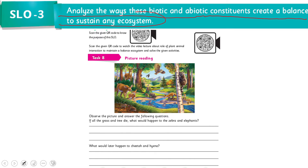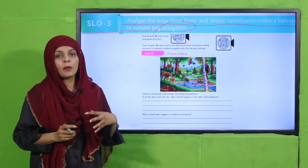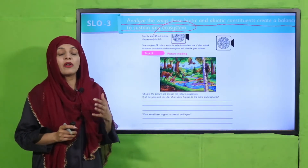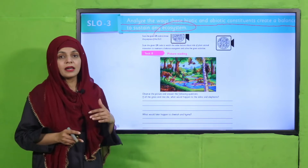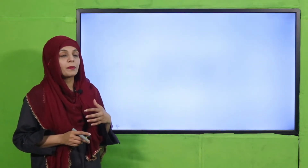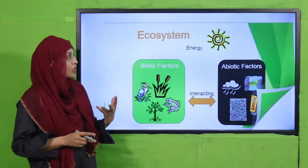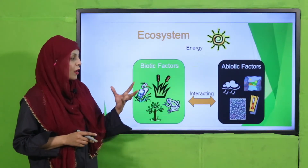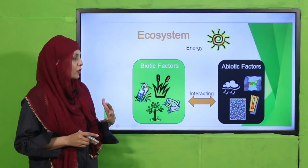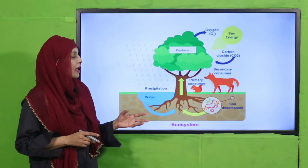The SLO states: analyze the ways biotic and abiotic constituents create a balance to sustain any ecosystem. We have studied biotic and abiotic factors in the previous SLO. Now, under this SLO, we look at how both factors create a balance, how they depend on each other, and how they create different food chains in these ecosystems.